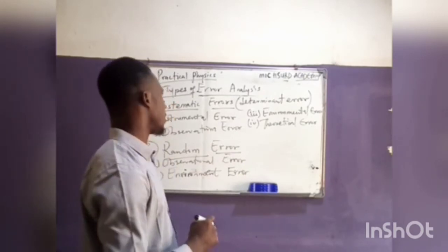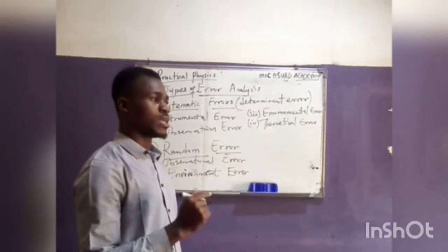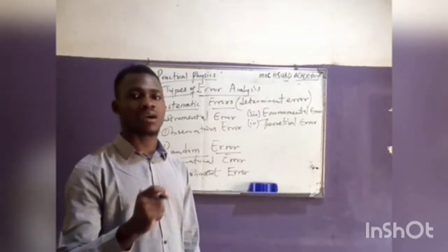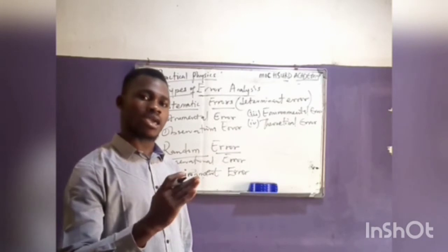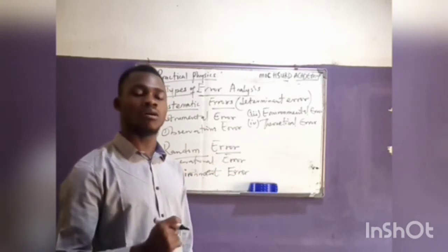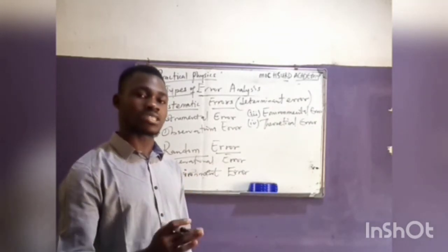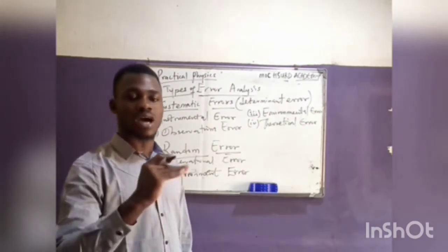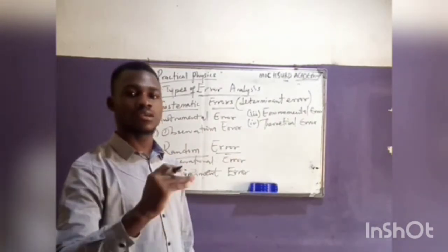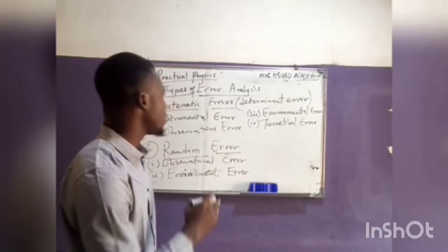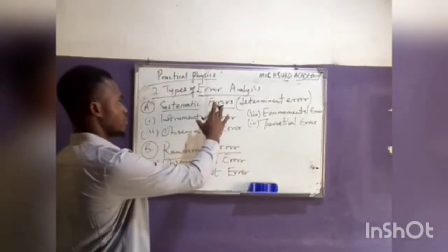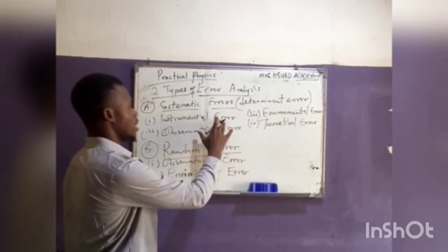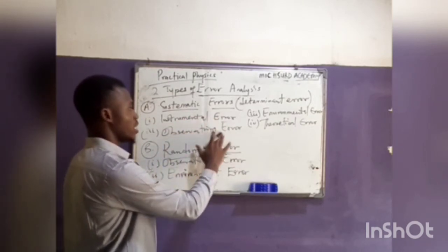Systematic errors give us values that are consistently too high or consistently too low — it's one or the other. Now we have different kinds of systematic error, which include: the instrumental error, the observational error, the environmental error, and the theoretical error.